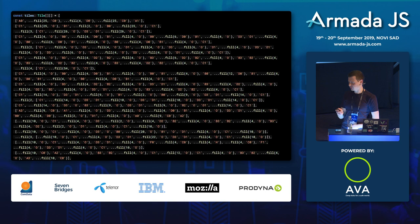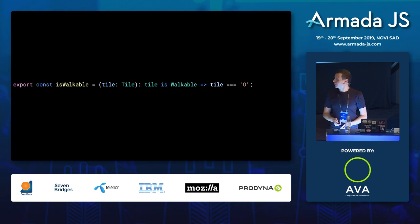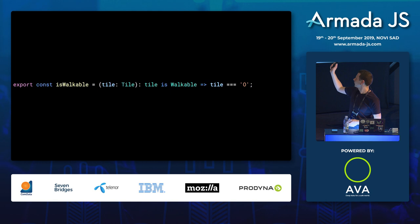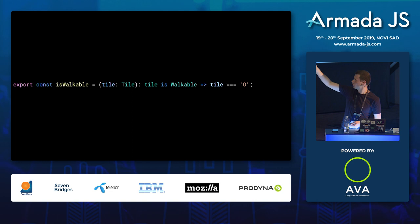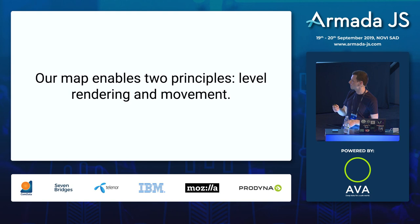To determine if a tile is walkable, we use the string literal type 'O'. You might notice the syntax 'tile is walkable' — in TypeScript, this is called a type guard. What this allows you to do is not only ascertain if a value is true or false, but if it's true, it means the parameter you've passed is of that type. We're getting more static information for our compile time feedback, which is incredibly useful.